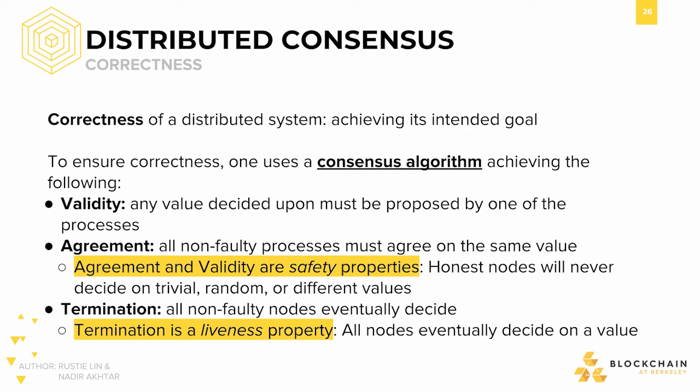By understanding these three essentials of a consensus algorithm, you now understand what is needed for any distributed system to come to consensus. Identifying the goals of a consensus algorithm is critical to understanding different approaches. Before we get into examples of consensus algorithms, however, we need to understand more of the caveats of distributed systems and the trade-offs that any system must make.